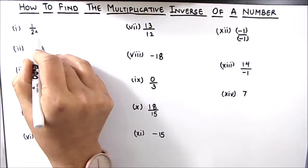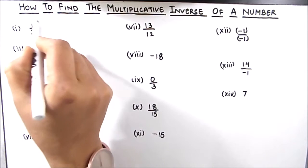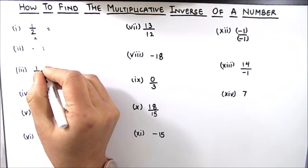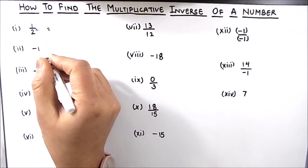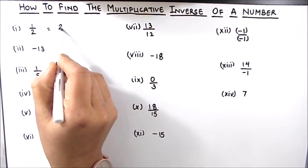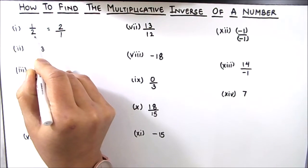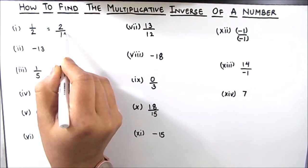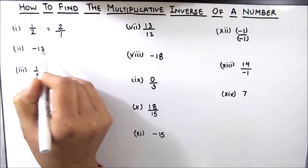For example, if we want to find the multiplicative inverse of 1 by 2, we just need to take the inverse of this number. For taking the inverse, we just switch the numerator and denominator — so our numerator will be the denominator and the denominator will be the numerator. So the reciprocal or the multiplicative inverse of 1 by 2 is 2.